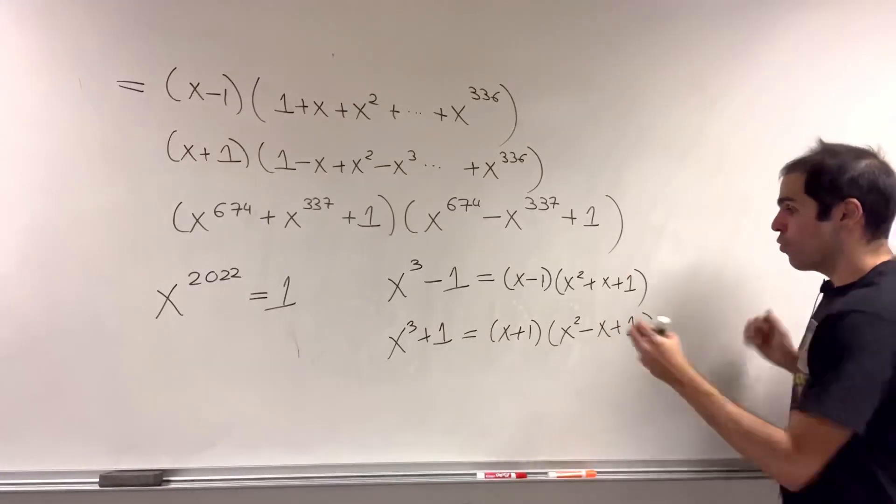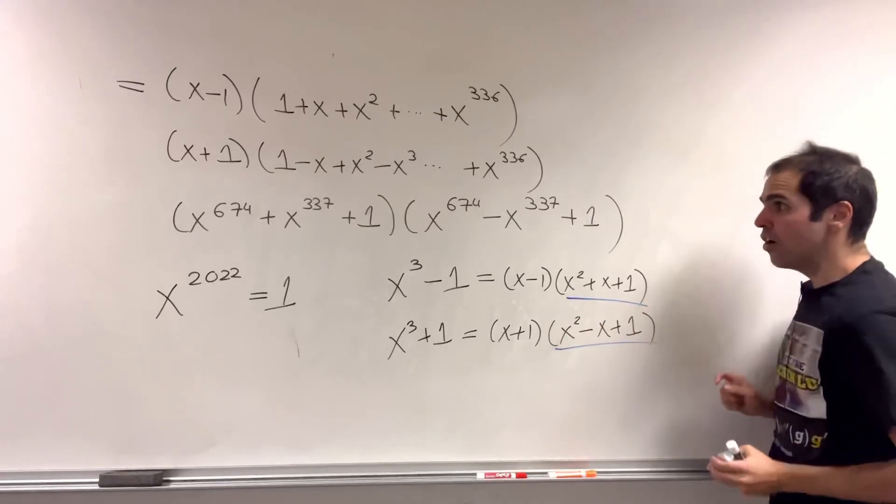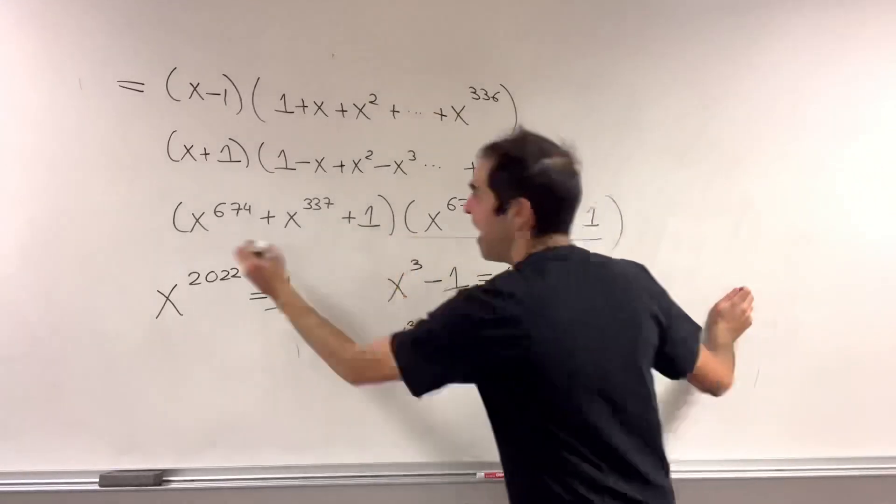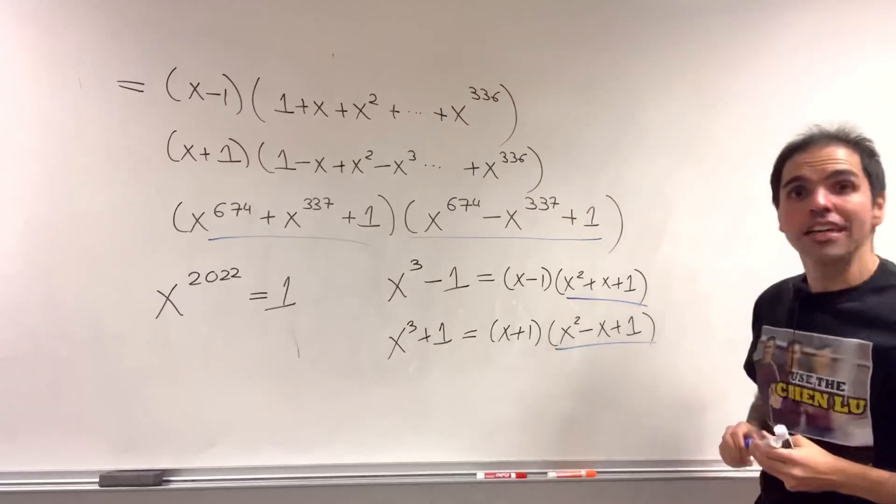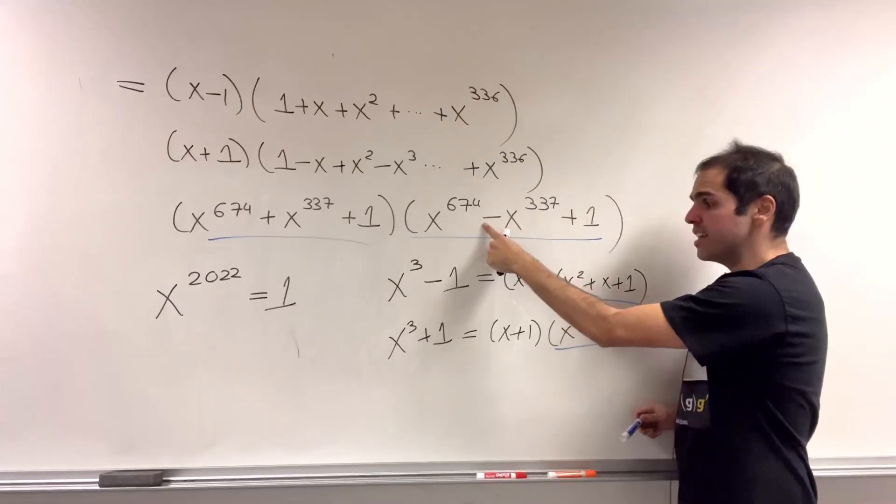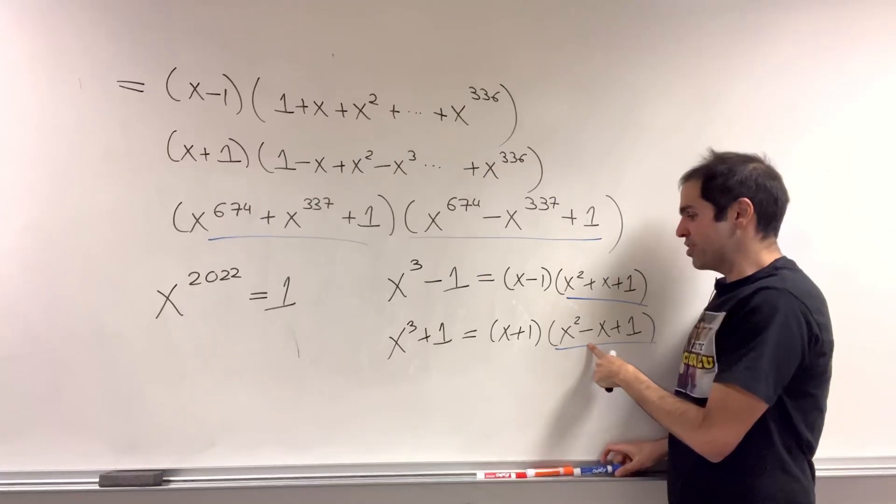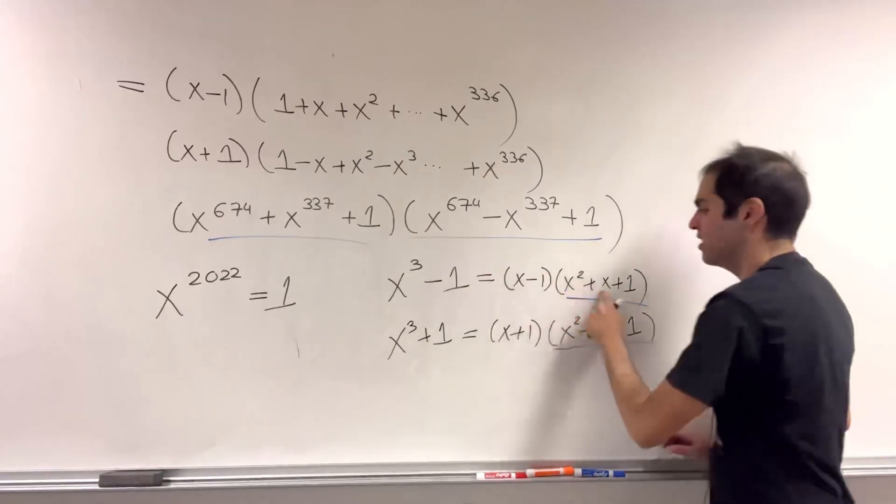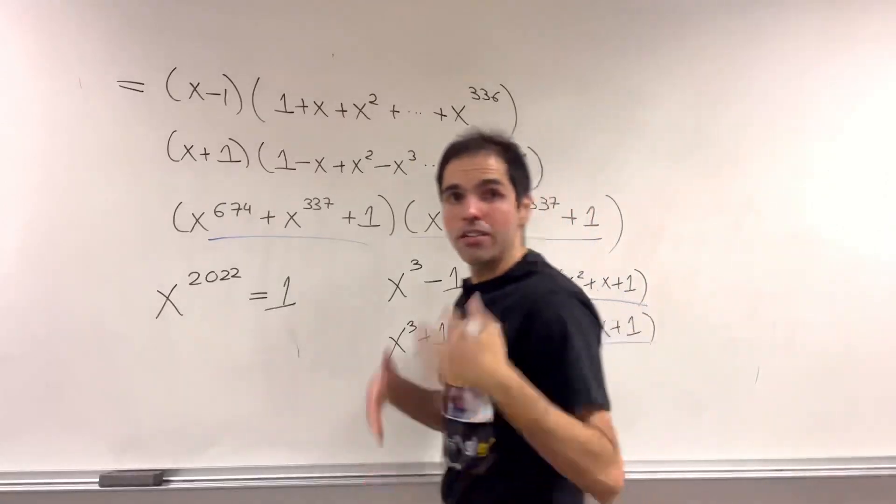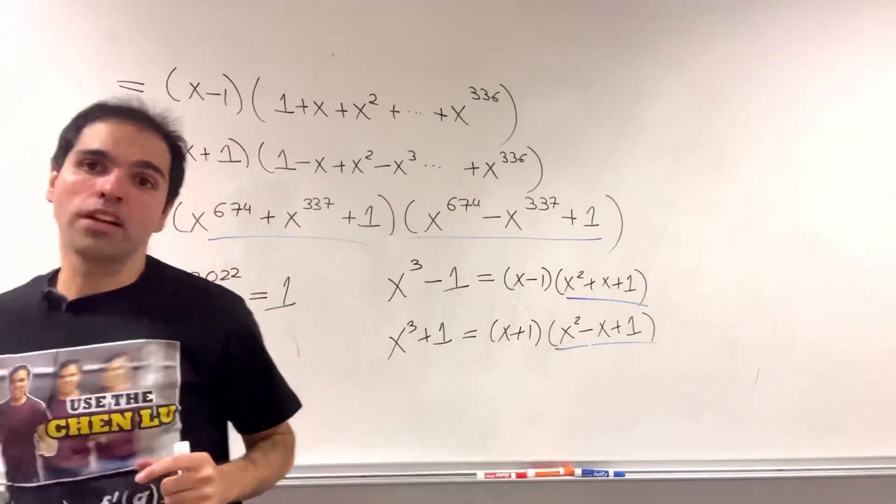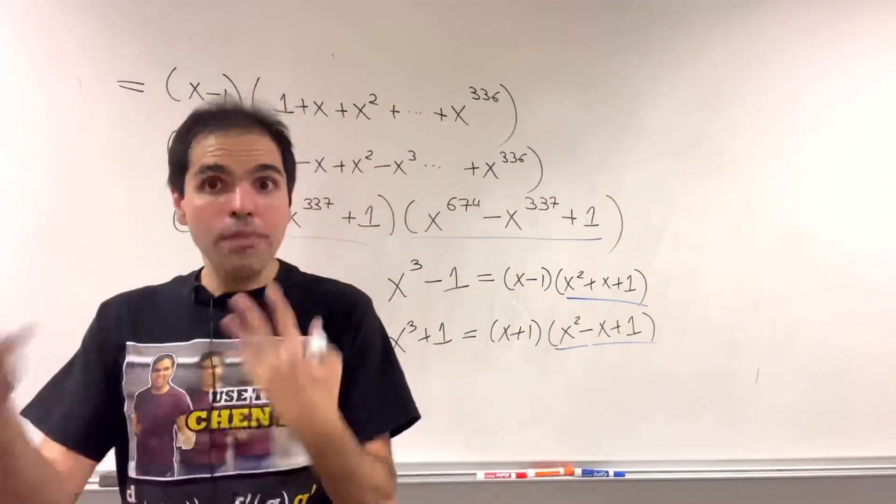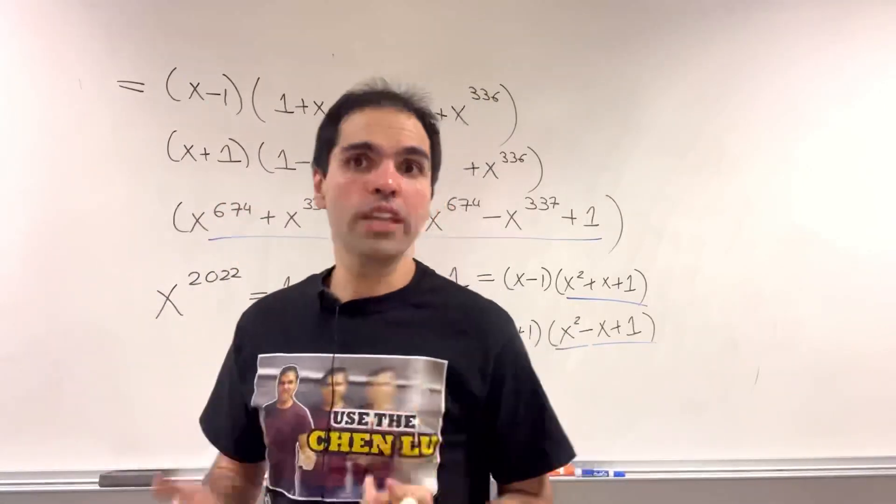And you might ask, well, where do those factors go? They're precisely in those expressions. So it turns out this expression, you can still divide it by x squared minus x plus 1. And this expression, you can divide it by this one. So we can actually go one step further. And let me show you the long division, so you can see the pattern.